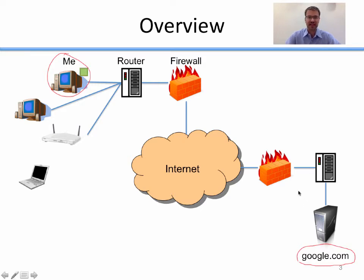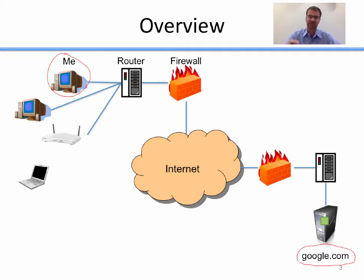If I want to send a packet of information from me at QU to Google, that packet goes from me through the router, through the firewall, through the Internet, through Google's firewall, through Google's router, and down to Google's server. If they want to reply, it'll go back the other way. There's a whole bunch of different networking devices that sit on your network in order to route packets — this is just a high-level overview.